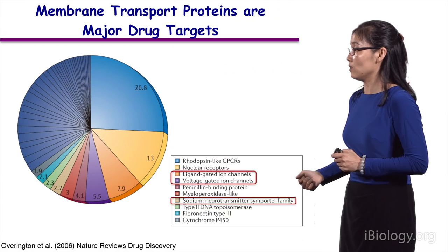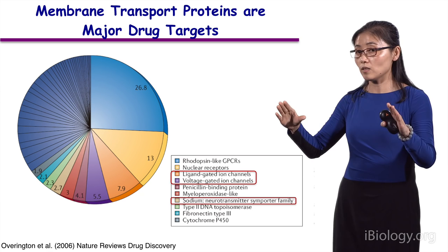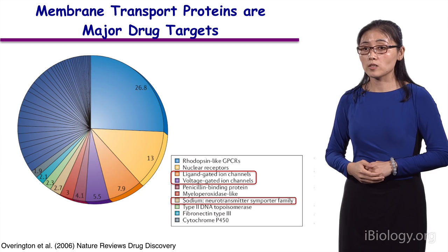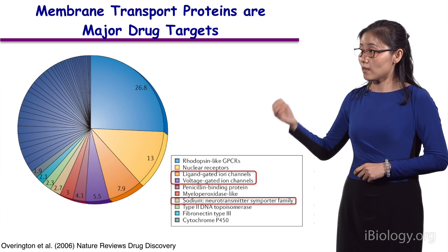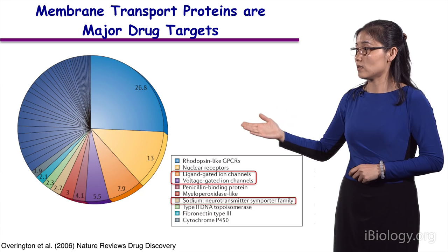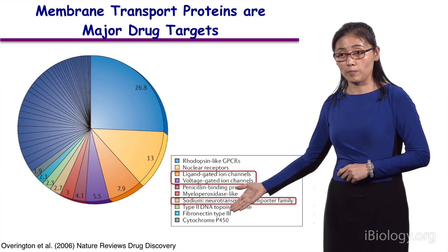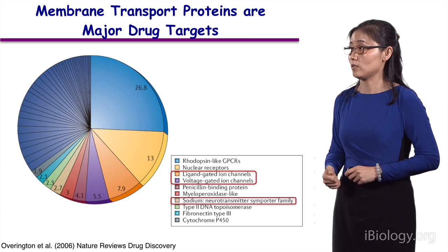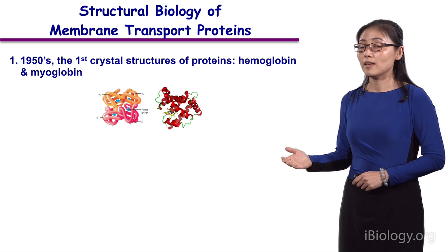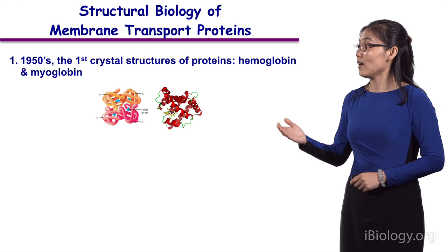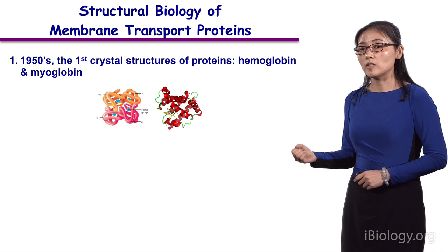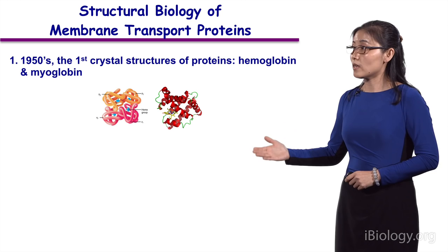The function, mechanism, and structure of these channels have represented important targets for structural biology. And because of their important role and because they reside at the interface between the cell and the environment, membrane transport proteins represent major drug targets. Shown here is a statistic made about a decade ago — even at that time, about one-quarter of the FDA-approved drugs target ligand-gated ion channels, voltage-gated ion channels, and transporters. And now, more and more drugs are being developed targeting these channels and transporters. Because structural details are important for the development and optimization of lead compounds, structures of membrane proteins have been pursued by many labs throughout the years. However, due to technical difficulties, structural biology of membrane transport proteins has been much slower than other biomolecules.